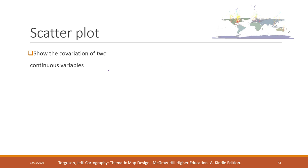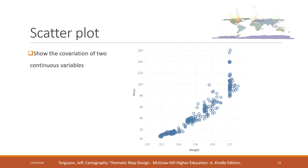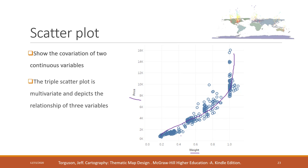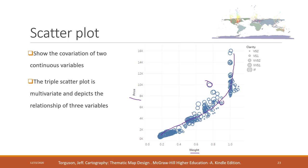A scatter plot is used to show the relationship between two variables. For example, here we can see the relationship between weight and price — when weight increases, the price also increases, so both variables have a strong positive relationship. We can add a third dimension by using size to indicate a third variable, such as clarity, though this can make the visualization more complicated.